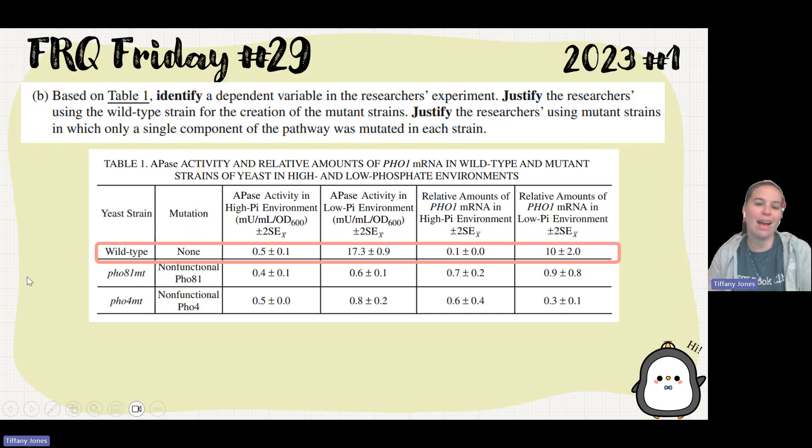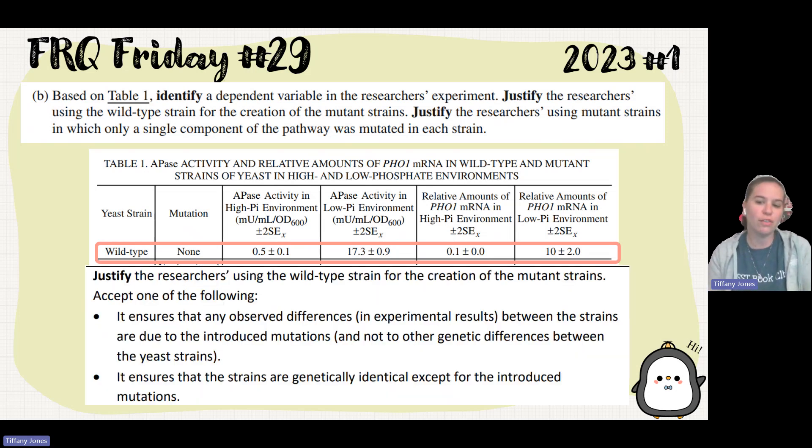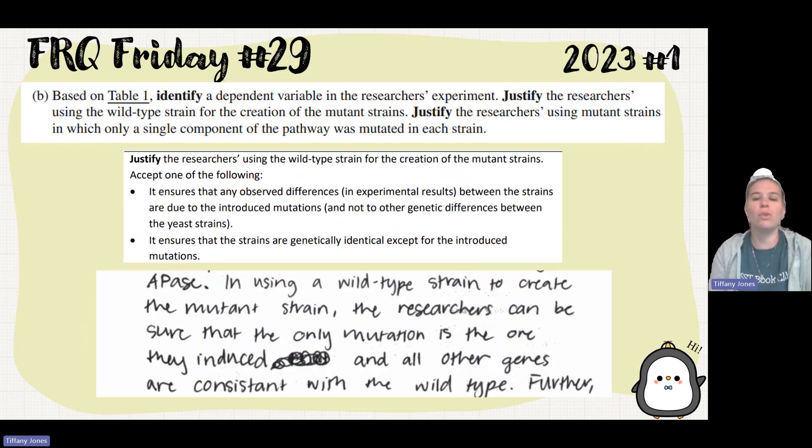So then they said, justify the researchers using the wild-type strain for the creation of mutant strains. Why do I need to have this wild-type thing? What would be the function of having this? Well, the control is always going to allow us to determine how my independent variables are affecting the outcome. It ensures that the observed differences between the strains are due to the introduced mutations. They mutated these different yeast, and they want to see if the changes from those mutations are actually affecting the APase activity as well as the PHO1 amount. It ensures that the strains are genetically identical except for the introduced mutations. Student said, in using a wild-type strain to create the mutant strain, the researchers can ensure that the only mutation is the one they induced, and all other genes are consistent with the wild-type.